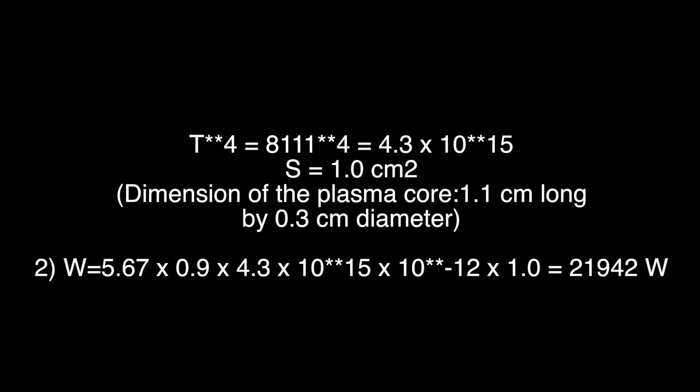This square that we consider is 1 square centimeter because the area that we have seen, that is the area around the cathode, is 1.1 centimeters long and has a diameter of 0.3 centimeters.